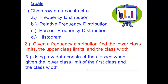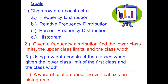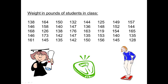Using raw data, construct the classes when given the lower class limit of the first class and the class width. Lastly, we'll have a word of caution about the vertical axis on histograms. We will divide these videos into parts to keep them short and sweet.